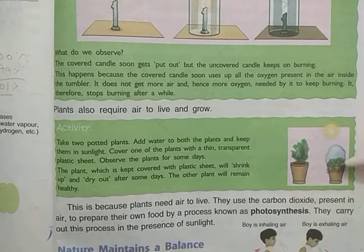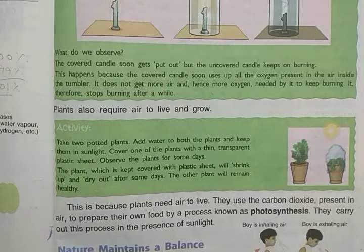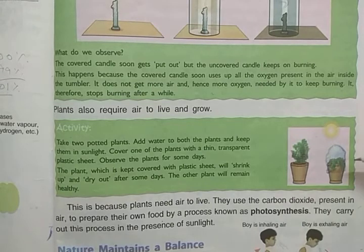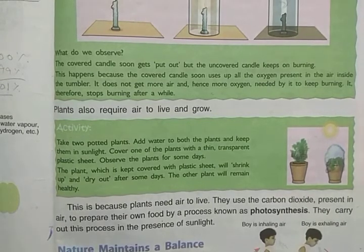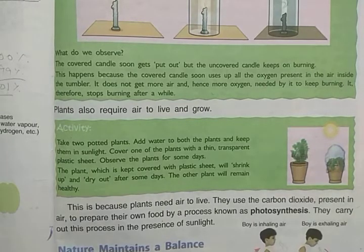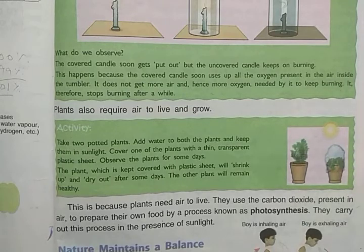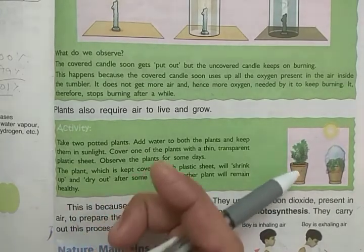The plant that is properly getting air grows healthy. The plant that was covered with the plastic sheet will shrink, dry up, and after a few days it will die. The other plant remains healthy. This activity shows that plants also need air to live. The air inside the covering was used up by the plant, and with no fresh air coming in, the plant died.